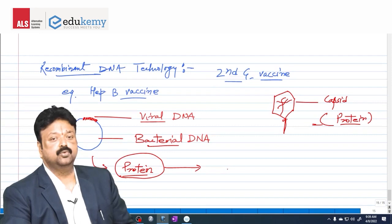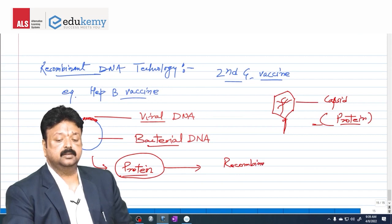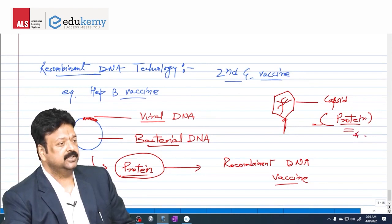And from this cell, the protein is separated, purified, and now this becomes recombinant DNA vaccine. In recombinant DNA vaccine, we are producing mass-based production of this protein. We will discuss later in detail by using biotechnology.